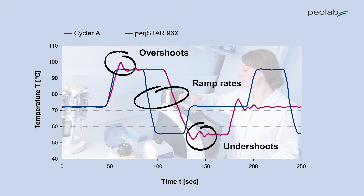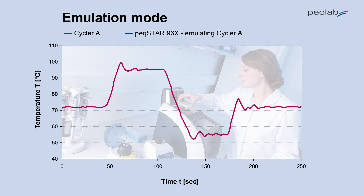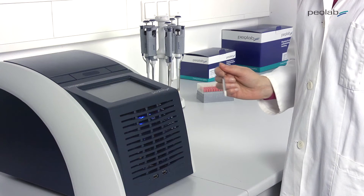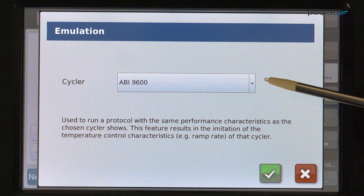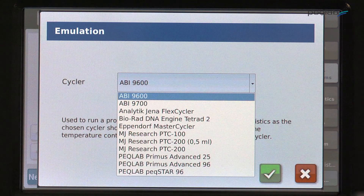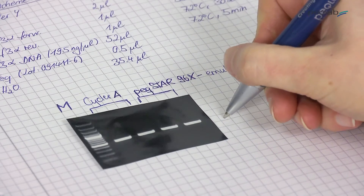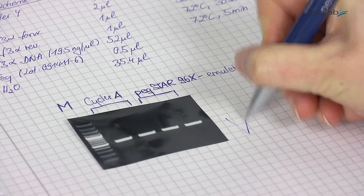With the PECSTAR range, we now give you the option to run in normal PECSTAR mode, or actually to emulate or copy the temperature profile of another type of cycler. Just choose another brand from the emulation mode to copy its performance, and by doing so, identical PCR results will be obtained.